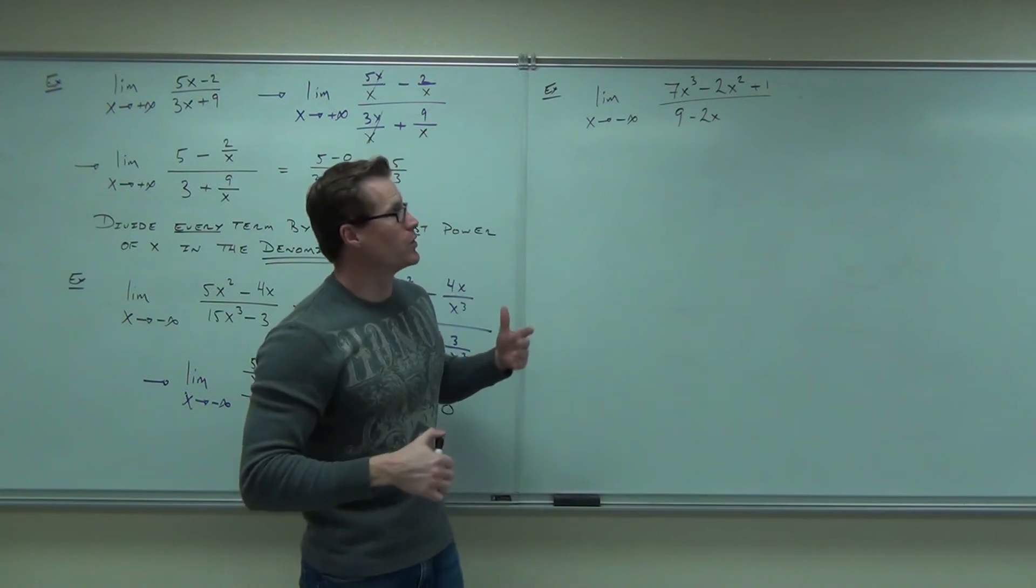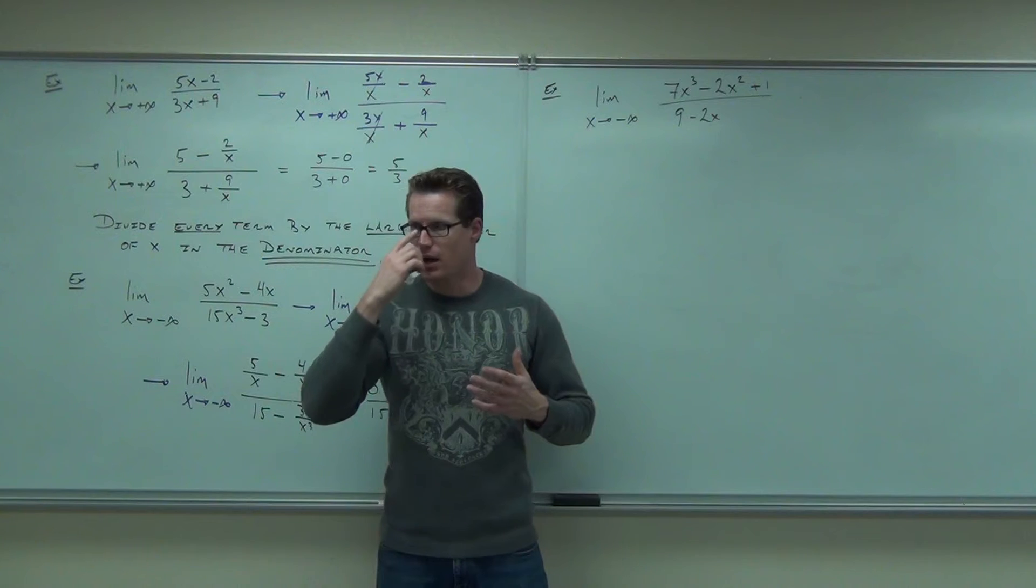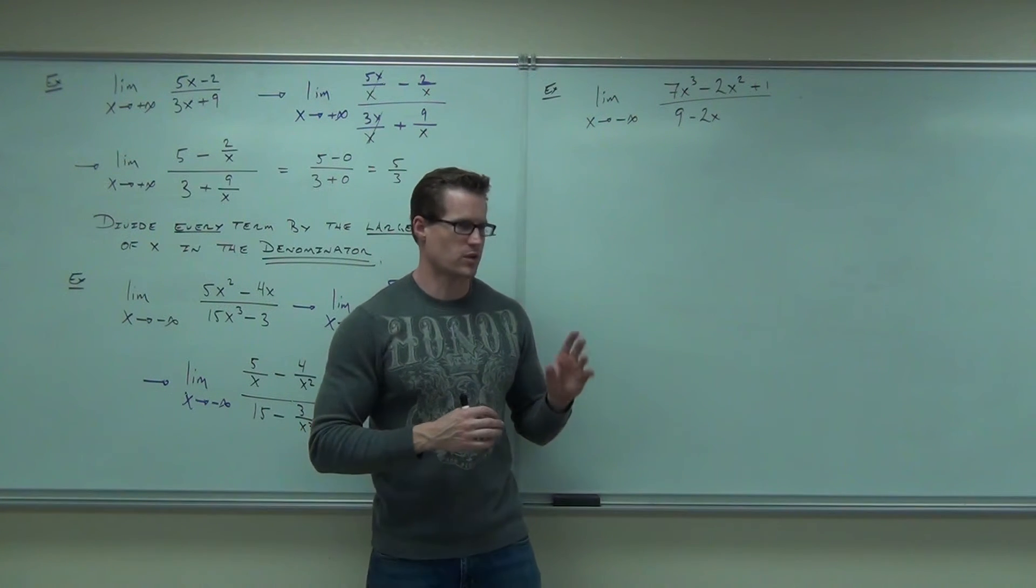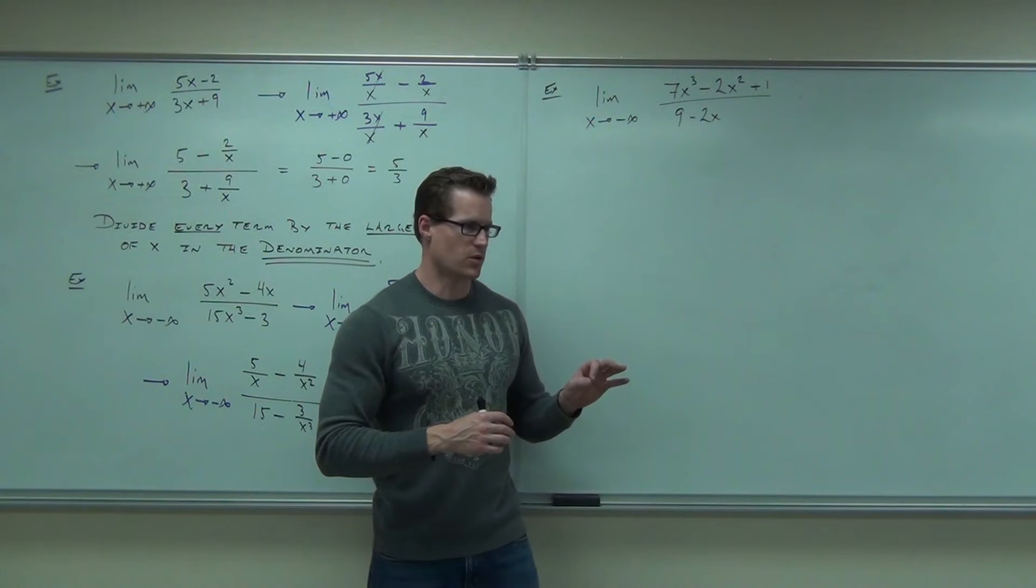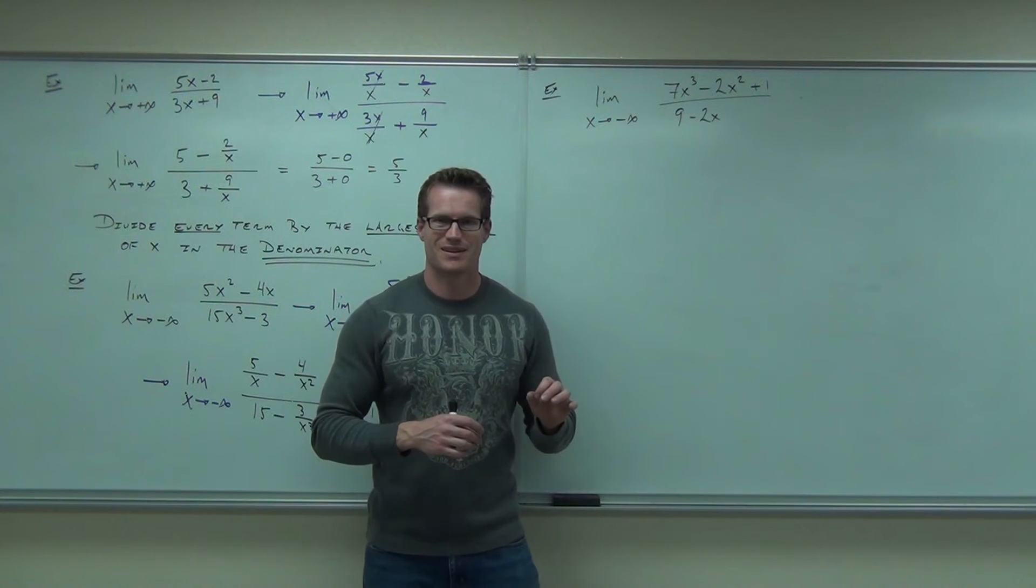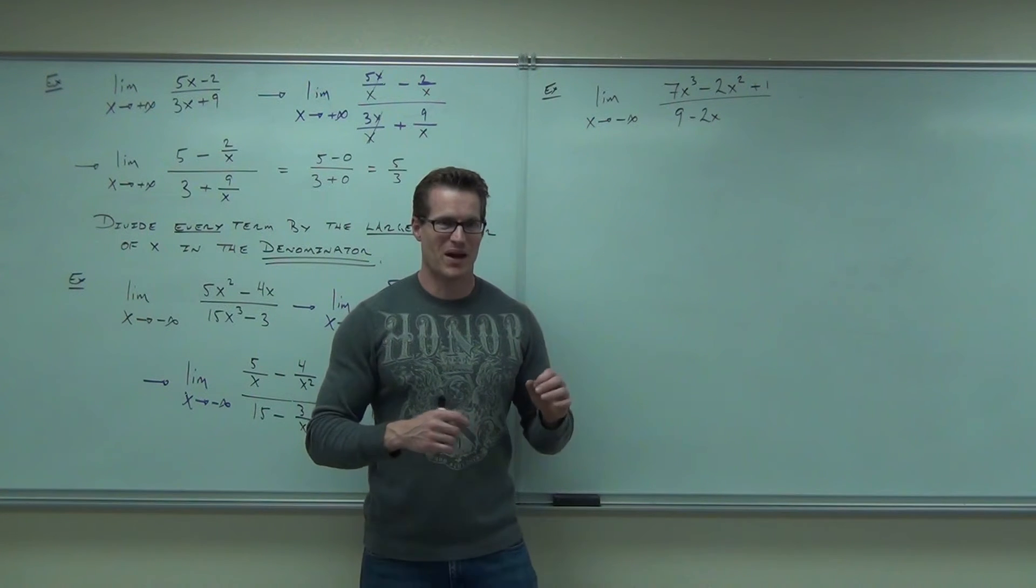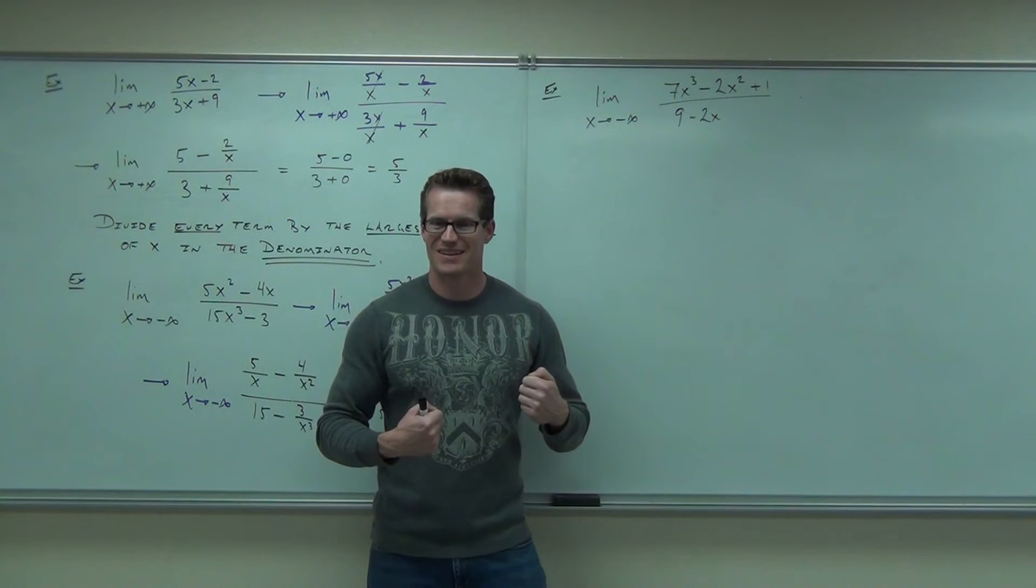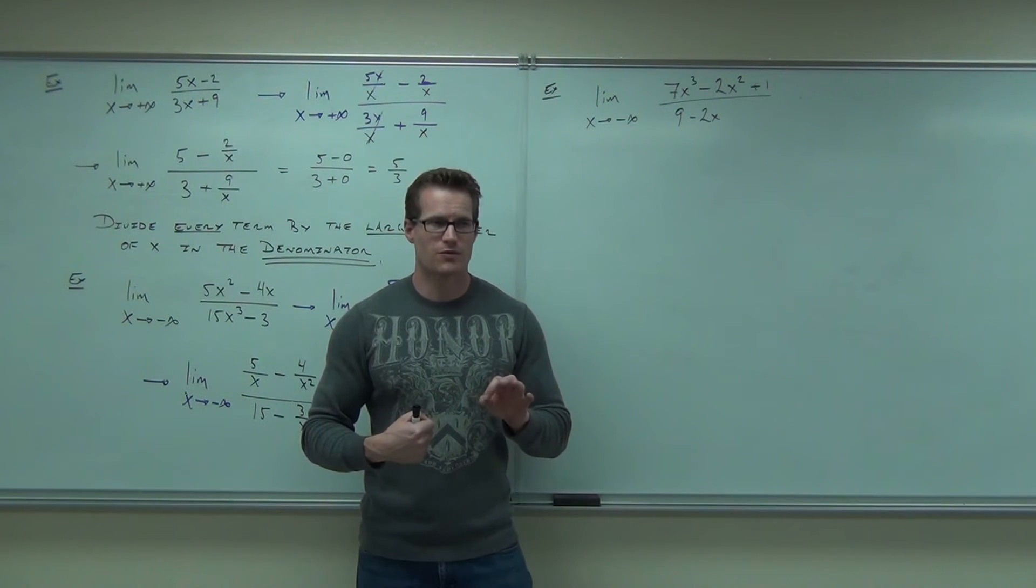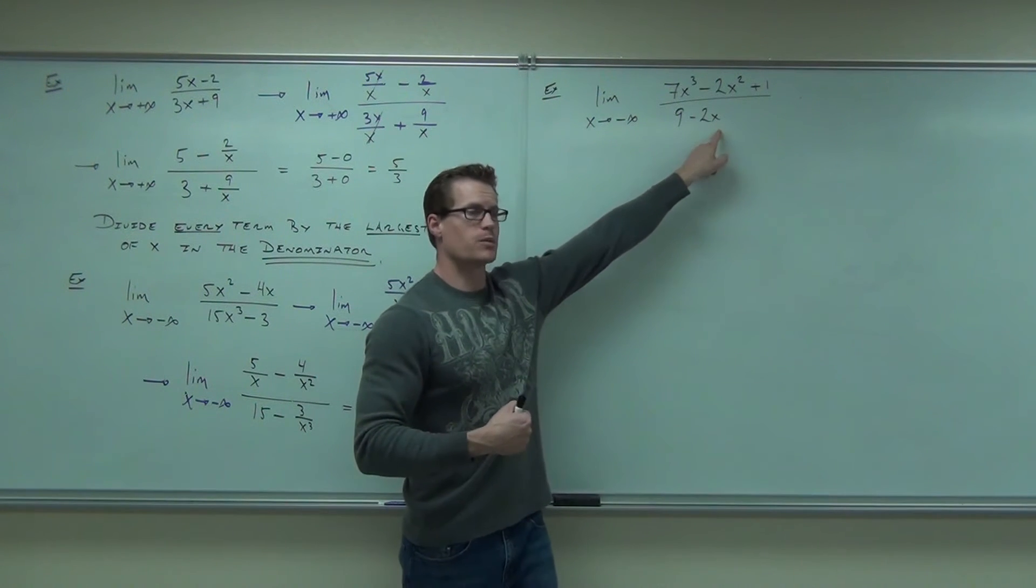Again, some of you who kind of understand this concept right now should probably be able to tell me where this is going to approach, or at least have a guess. What is it going to approach? Negative infinity. Okay. Positive infinity. Okay. Battle royale. Well, you might want to do the work to make sure, but do you see it's not going to go to a constant? Do you see it's not going to go to zero? What are we going to divide by? x cubed, x squared, or x? The largest power in the denominator.